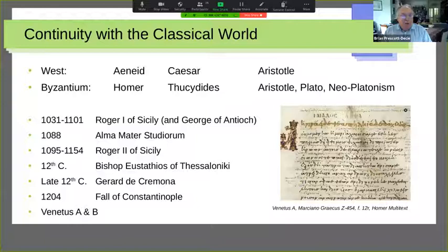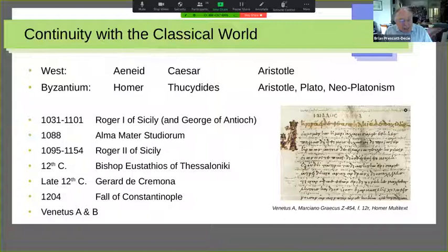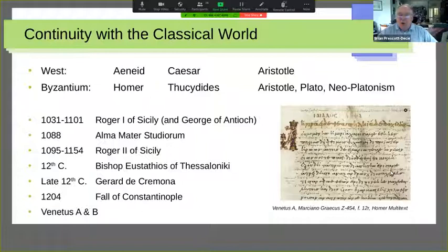In roughly the same period the first private universities appear, typified by the Alma Mater Studiorum in Bologna, where the standard course was Western philosophy — Aristotle, Caesar, Ovid, etc. Simultaneously in the East, Greeks like Eustathios of Thessaloniki were studying Homer and providing the major commentaries on Homer still in print today, interleaved in manuscripts such as the Venetus A.